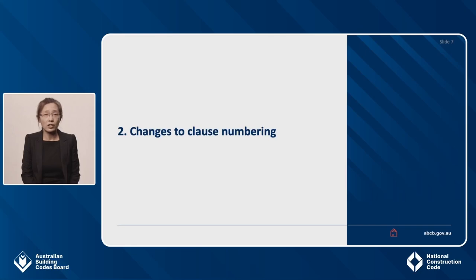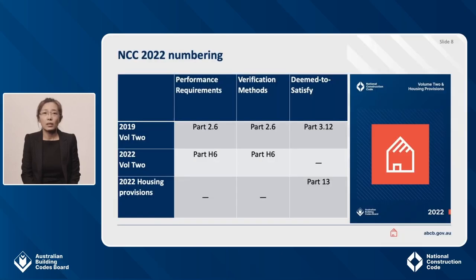Let's start with the key changes to class numbering. One of the key changes is the updates to the class numbering that occurred throughout the entire NCC. It is referenced as SPTC, which reflects the new system reference syntax: section, part, type, class. Some examples are shown on the screen. Importantly, SPTC retains as much of the previous NCC's reference system as possible. To assist practitioners transition to the new referencing system, NCC 2022 includes NCC 2019 numbering alongside the new numbering.